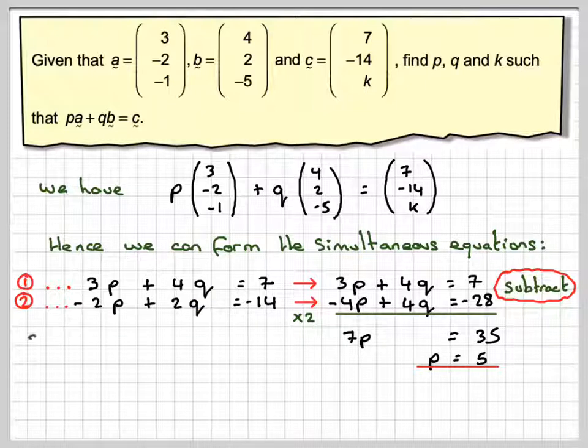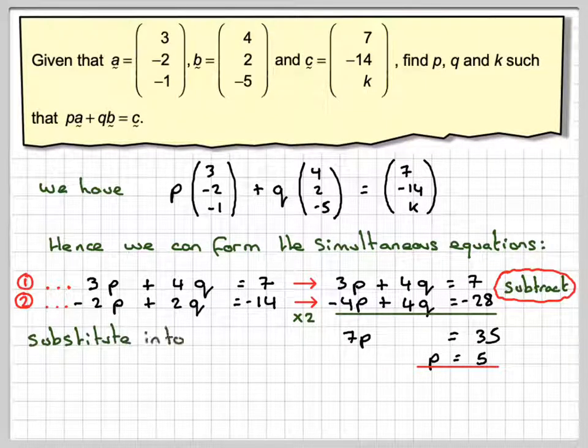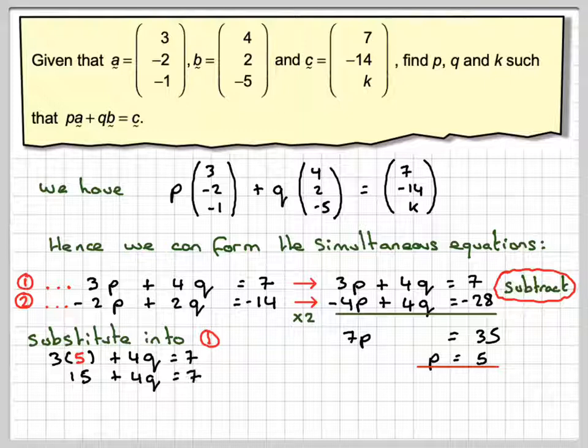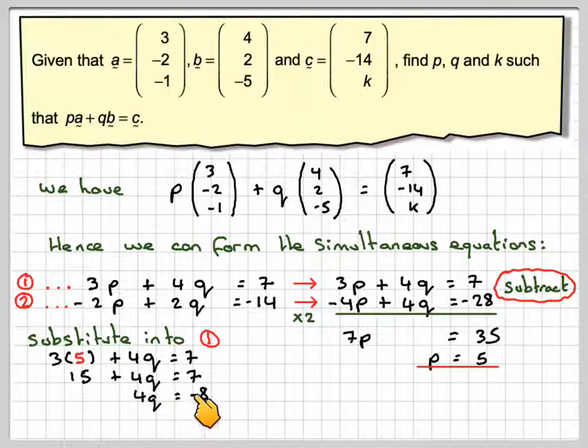We just substitute back into 1 or 2. So substitute into 1. We're going to get that 3 times 5 plus 4q = 7. 15 + 4q = 7. 4q will be equal to 7 minus 15, which is -8, and then we can see that q = -2.